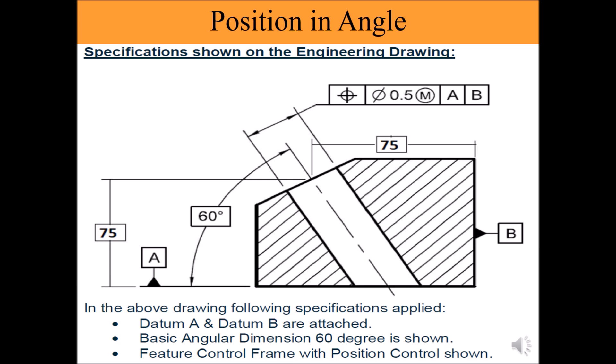Step 3: Apply all necessary linear and angular dimensions as basic. We know in GD&T we don't put tolerances on the basic dimensions but apply geometric tolerance on the feature.